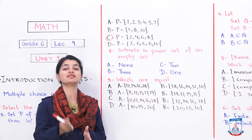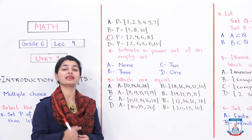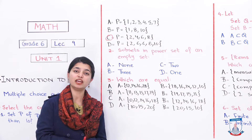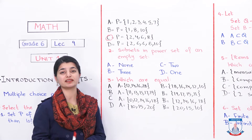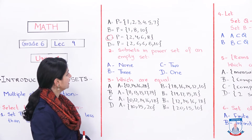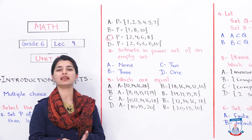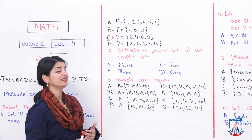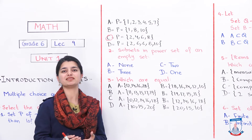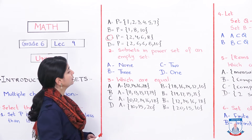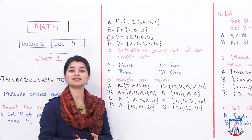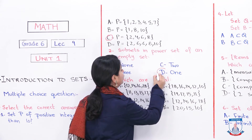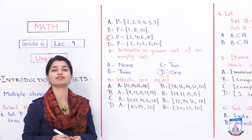A set is one from which you can write possible subsets. The question asks: how many possible subsets can be formed from an empty set? Obviously, if the set is empty, only one subset can be formed — the empty set itself. Option 'none' is incorrect because at least one empty subset exists. Options with 2 or 3 subsets are also wrong. The answer is option B — one subset, which is the empty set itself as an improper subset.